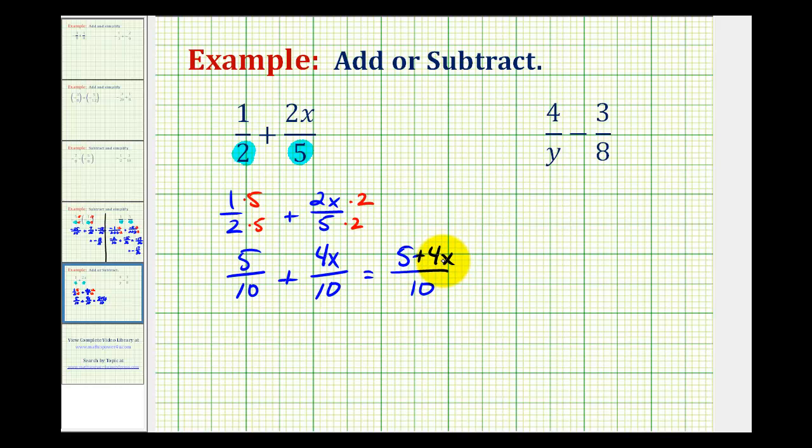However, normally when writing an expression, we do want to put the variable terms first. So let's go ahead and rewrite this as 4x plus 5 all over 10. These are both equivalent, but this is a little better form.